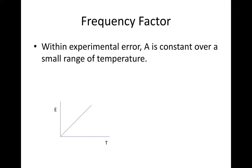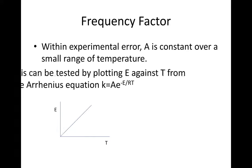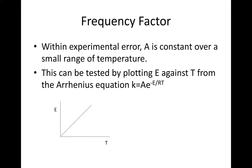The frequency factor: Within experimental error, A is constant over a small range of temperatures. This can be tested by plotting E against T from the Arrhenius equation, K equals A e to the minus E over RT.